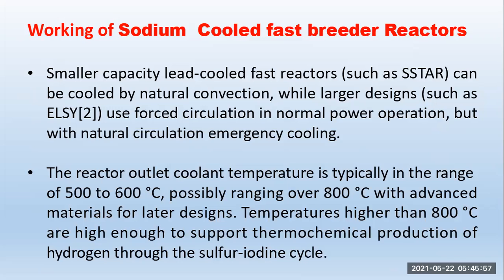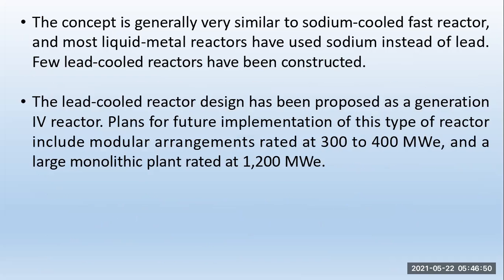Working of the sodium-cooled fast reactor: small capacity lead-coolant fast reactors can be cooled by natural convection, while larger designs use forced circulation in normal power operation but with natural circulation for emergency cooling. The reactor outlet coolant temperature is typically in the range of 500 to 600 degrees Celsius, possibly ranging over 800 degrees Celsius with advanced materials for later designs. The concept is generally very similar to sodium-cooled fast reactors, and most liquid metal reactors have used sodium instead of lead.